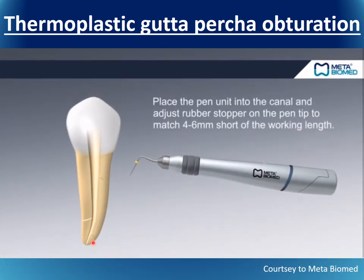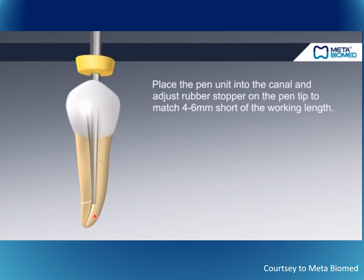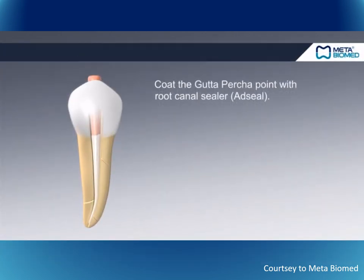Next, a heated spreader is placed inside the root canal to approximately four to six millimeters short of the working length. We then coat the gutta-percha point with root canal sealer and place it inside the root canal.